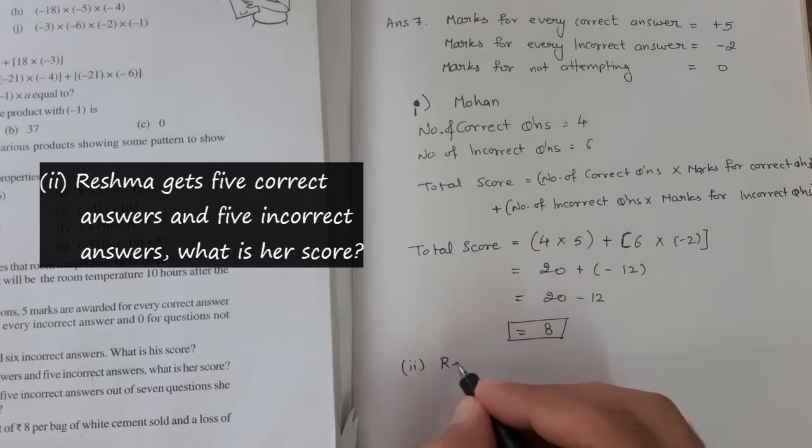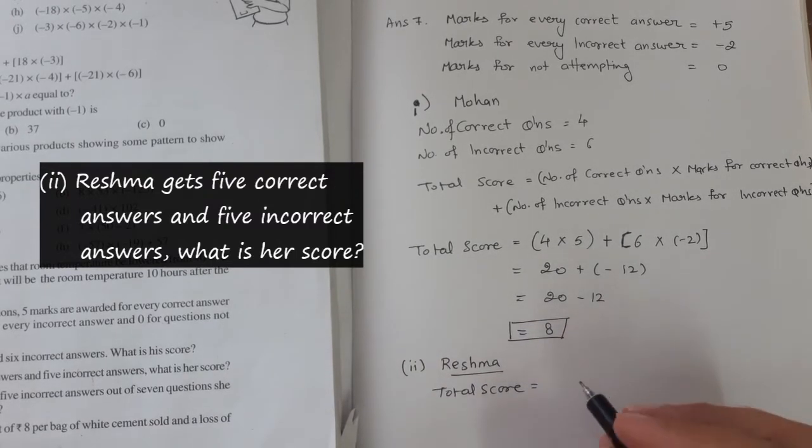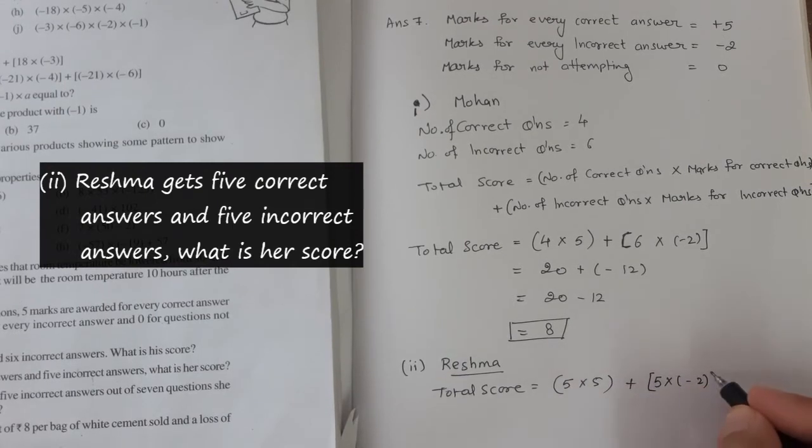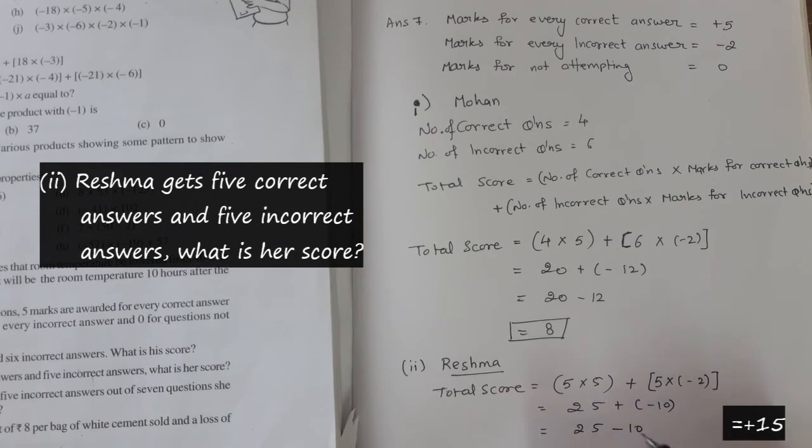So the total score for Reshma - she has got 5 correct, so 5 times 5 plus, and 5 incorrect, 5 times minus 2. That's 25 plus minus 10, which equals 25 minus 10, giving us 15.